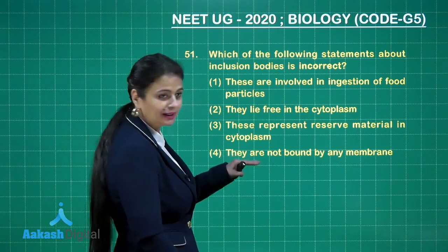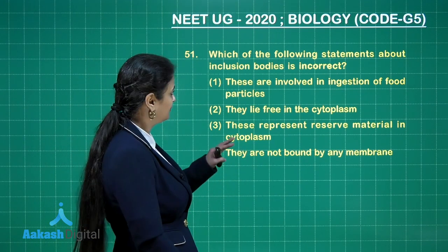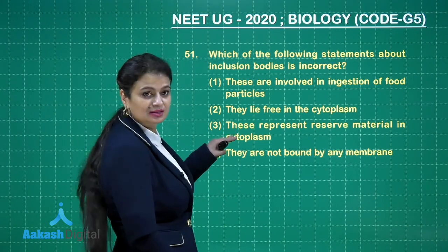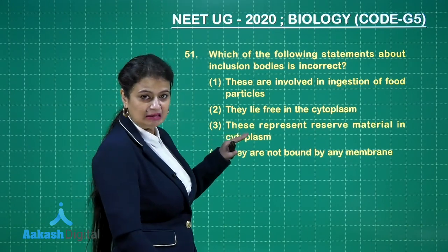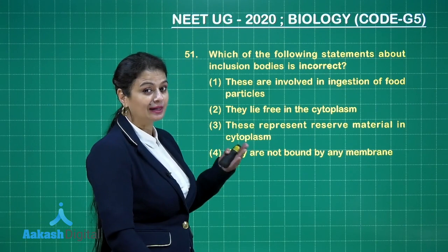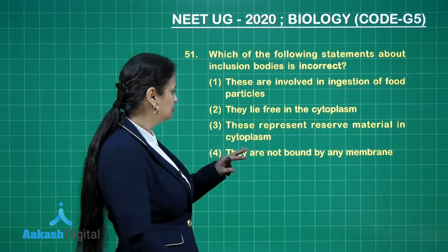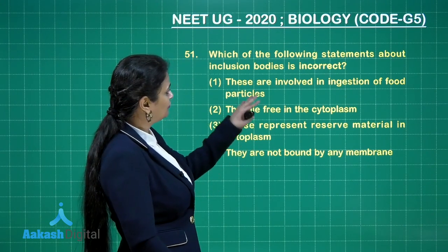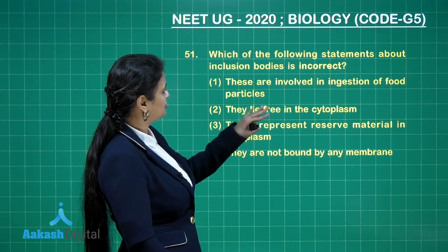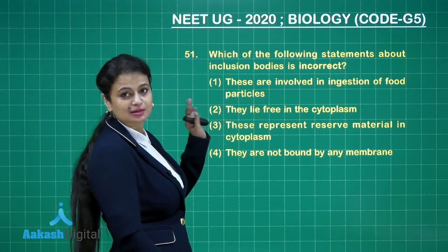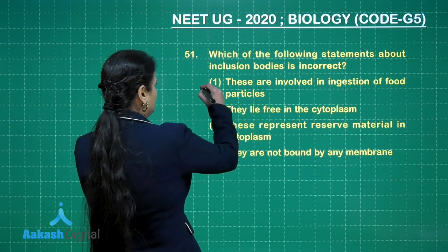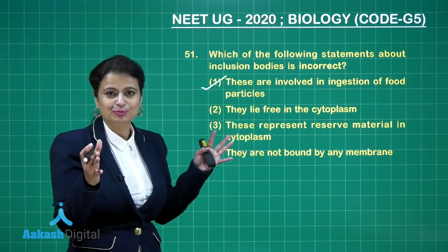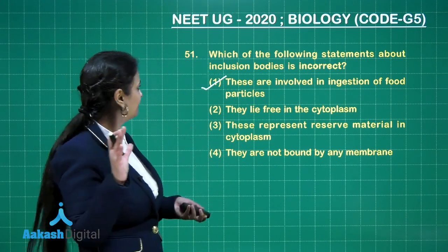Looking at the options from the bottom: they are not bound by any membrane — that's correct. They represent reserved food material in cytoplasm — yes, they can have glycogen, called glycogen granules. They lie free in the cytoplasm — correct. They are involved in ingestion of food material — this is the incorrect option, as inclusion bodies do not play such a role.